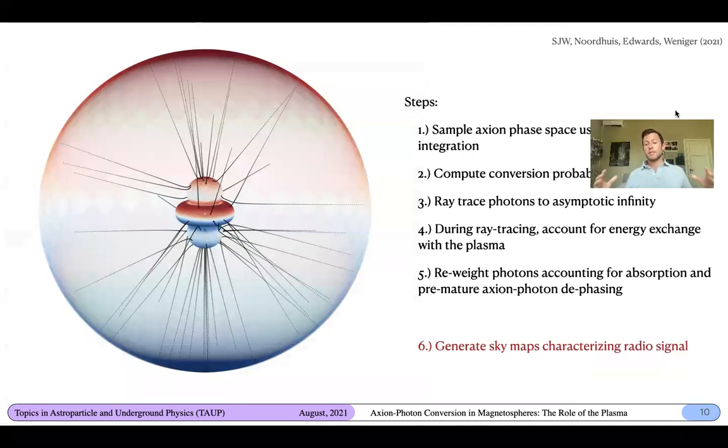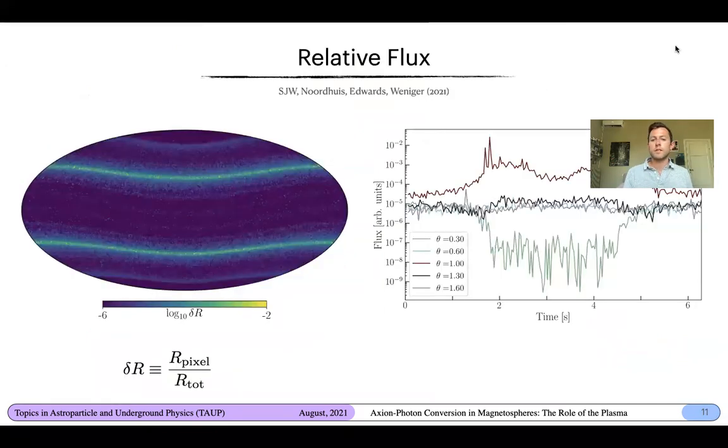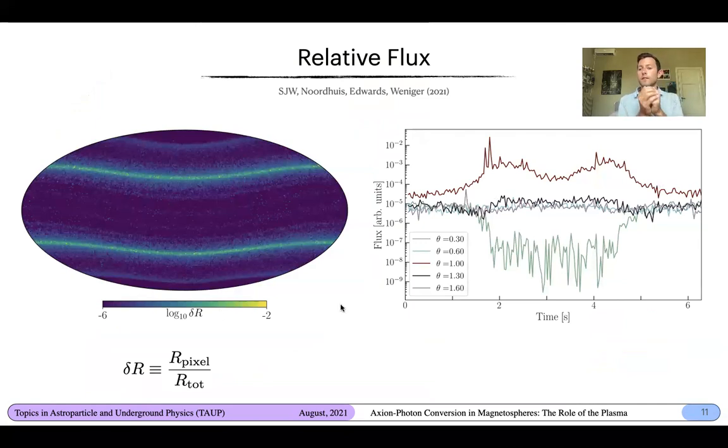Now, after we've gone through this process, we can collect all of these photons at asymptotic infinity, and we can use these to generate sky maps that characterize the radio signal. In particular, we can generate maps that characterize both the flux, the time dependence, the overall spectral features as a function of position in the sky. And if we go through this process, this is, for example, a sky map of the relative flux. So if you're sitting at the center of the neutron star and you look outwards at all angles, this is the flux as a function of these angles in the sky. This is in units of log 10. It's the relative flux, essentially the flux in a pixel divided by the total flux. And what you see are these very narrow, these bright, narrow flux peaks coming through these bands here. These are corresponding to photons which have been produced and have been funneled into the throats of the neutron star where the electron number density is extremely low. So there's a strong funneling process due to refraction of the plasma that pushes these photons into these regions.